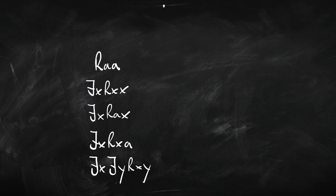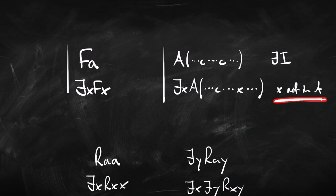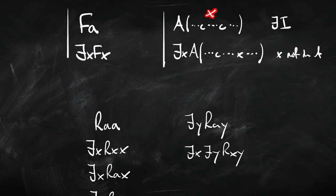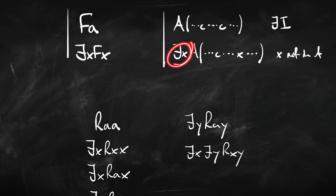In two steps we can infer someone likes someone: from Raa to there is a y, Ray; and from there to there is an x, there is a y, Rxy. One thing we do have to be careful of when applying existential introduction is that x — the variable we're introducing — isn't already in A as a free variable. If there was an x in there somewhere, when we put the existential quantifier at the front it would bind the x that was free inside, turning an open sentence into a closed sentence, which wouldn't be a valid inference. So whenever we use existential introduction, we must make sure the chosen variable x isn't already in A.